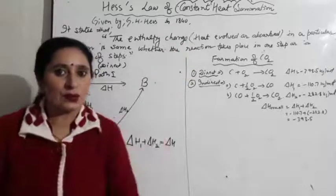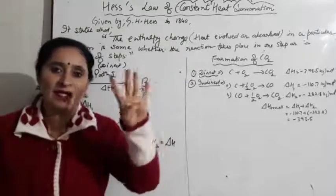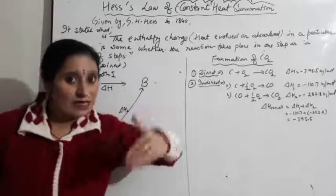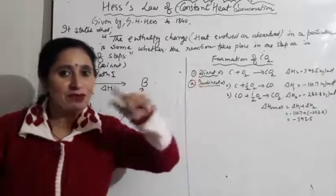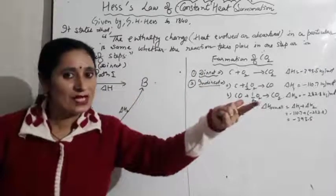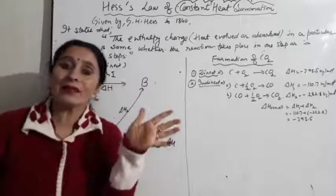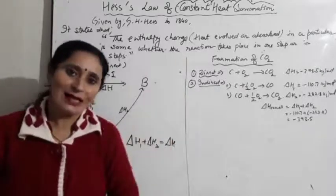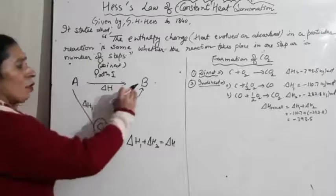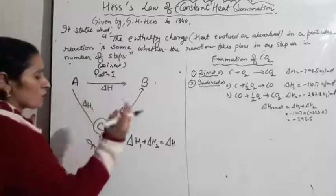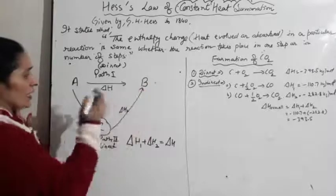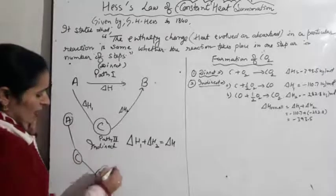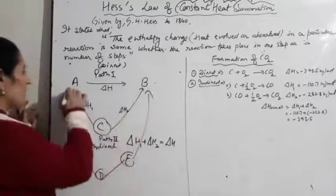Think of it like travelling from here to Pathankot — there are 4 stations in between. Whether you take a direct ticket to Pathankot or go step by step (station A, then bus to station B), the fare will be the same because bus fare is based on kilometers. Similarly, whether you do the reaction in one step or two steps or four steps — A→C→D→E→B — the enthalpy change is the same.